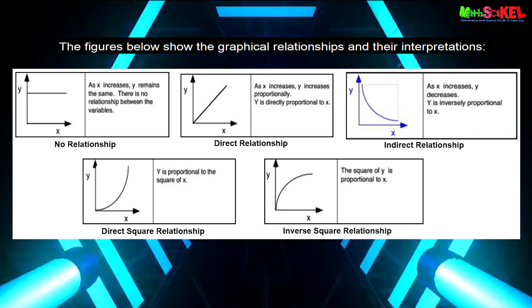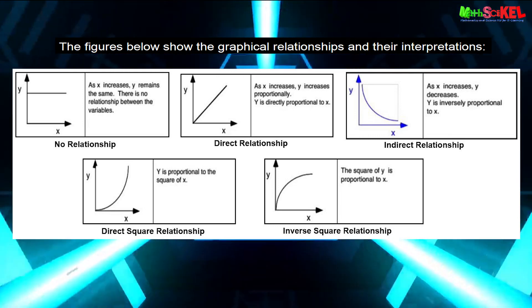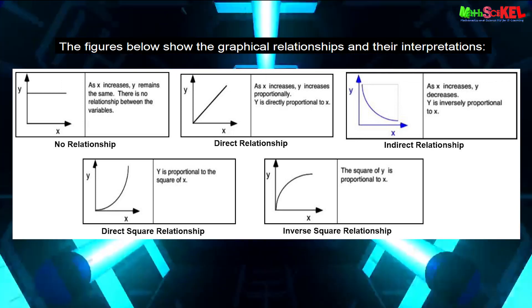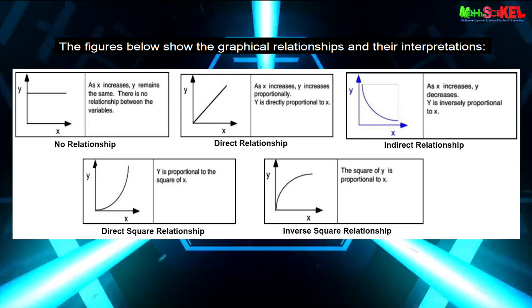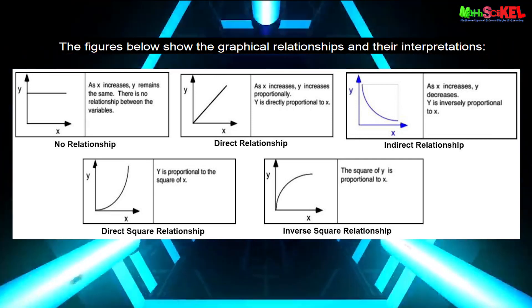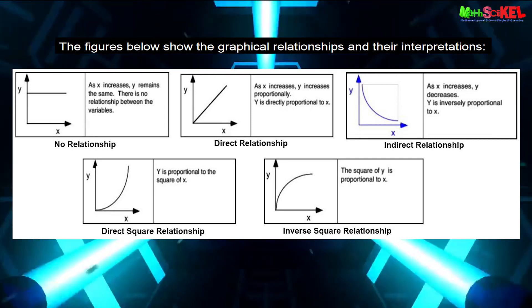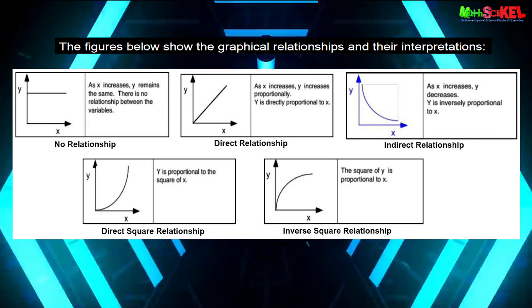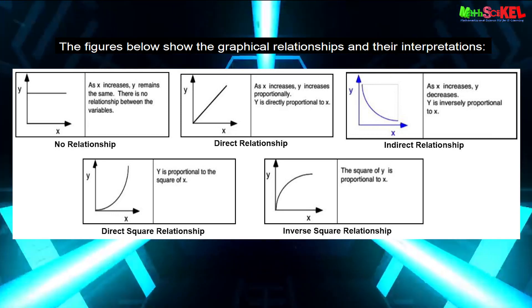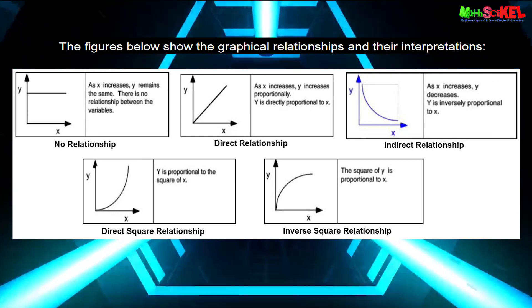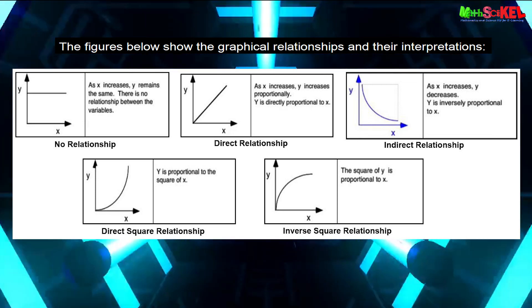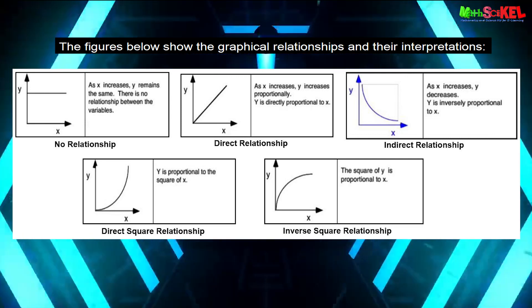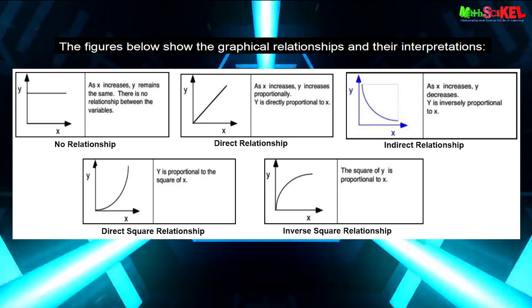The figures below show graphical relationships and their interpretations. When x increases and y remains the same, there is no relationship between the variables. In a direct relationship, as x increases, y increases proportionally — y is directly proportional to x. In an inverse relationship, as x increases, y decreases — y is inversely proportional to x. For a direct square relationship, y is proportional to x squared. And for the inverse square relationship, the square of y is proportional to x.